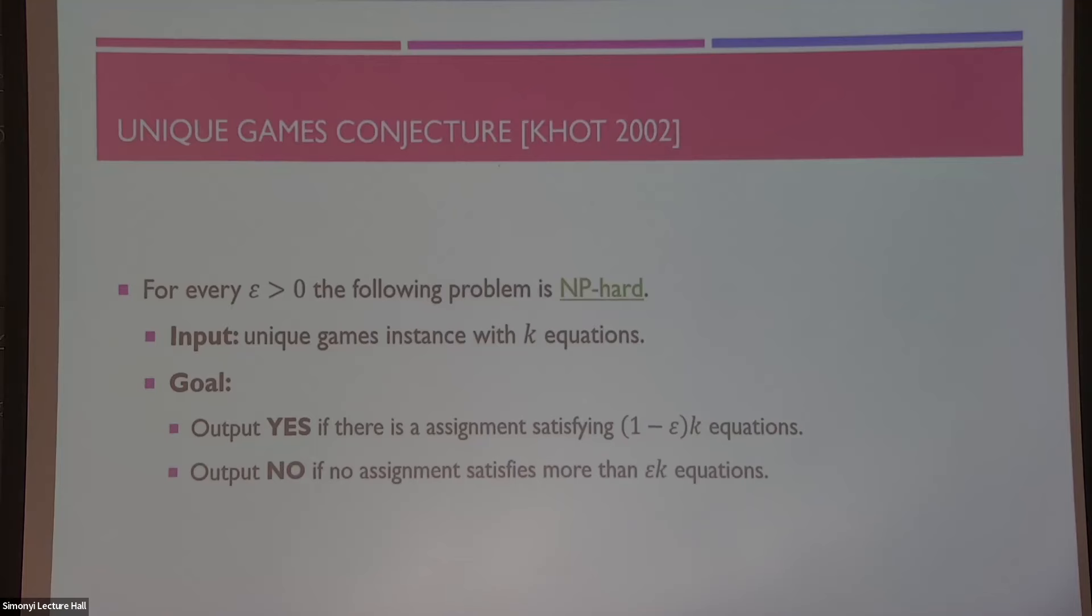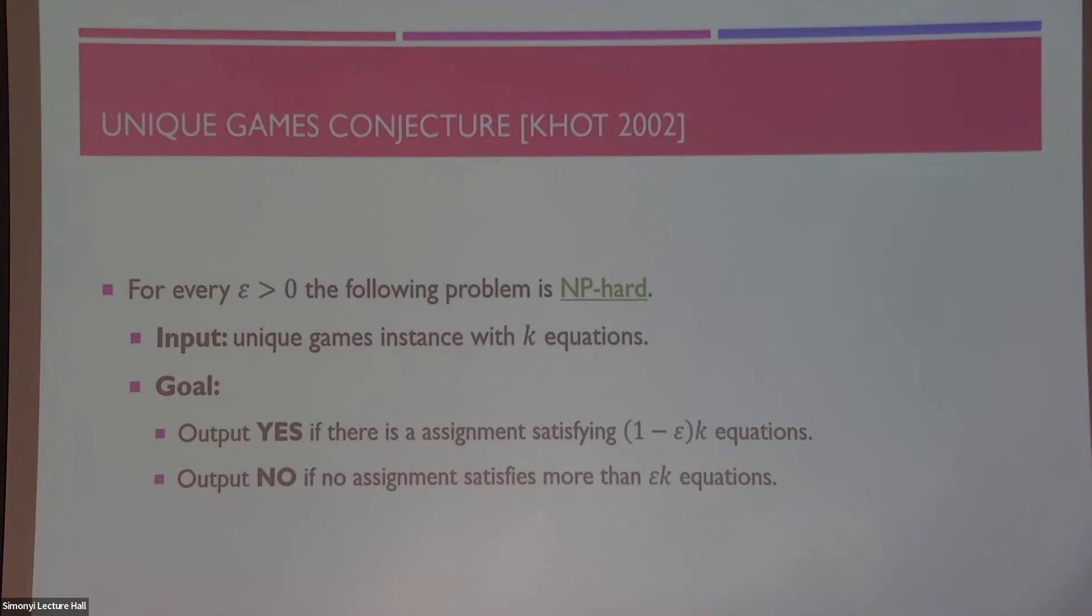Let me just note that this is sort of a promise problem. So, I don't know, if epsilon is 1% and like we have an input where the best assignment satisfies 50% of the equation, so we're not in any of these two, then we don't really care what the algorithm will output. So, the unique games conjecture said that for any epsilon as small as we want to take it, this problem is still NP-hard.